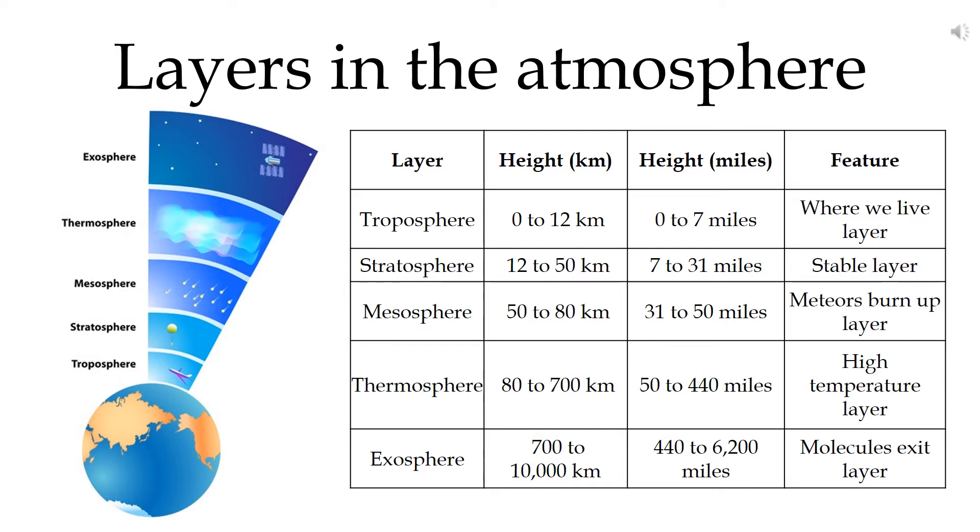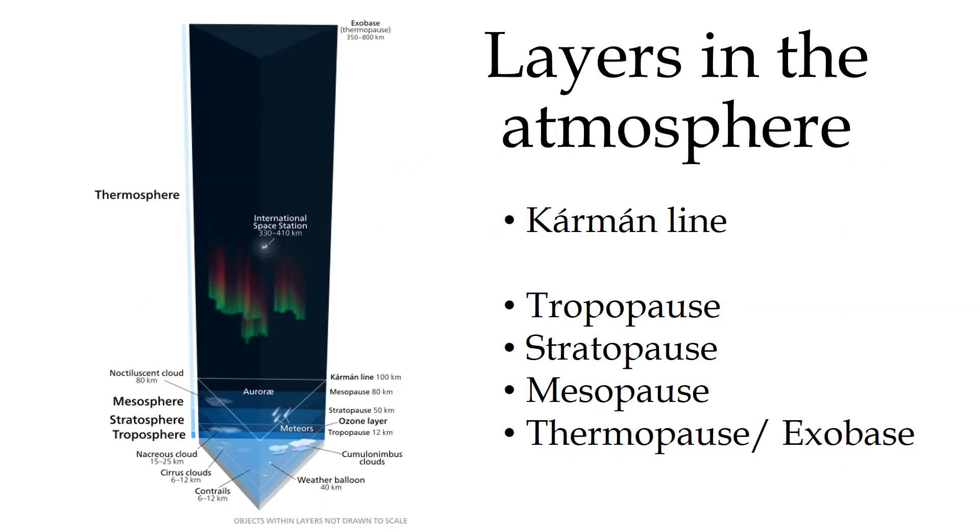At about 10,000km, the exosphere merges into the solar wind. You can think of the exosphere as where particles exit the atmosphere. There is no clear-cut distinction between where the Earth's atmosphere ends and where space begins, although the Kármán line at 100km is often referred to as the border between the atmosphere and outer space.